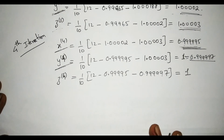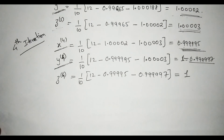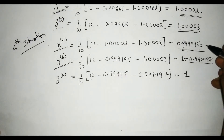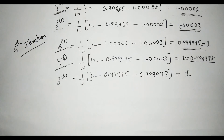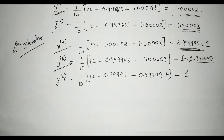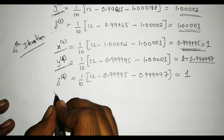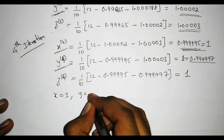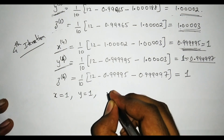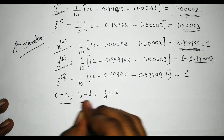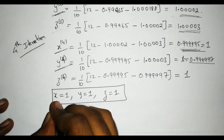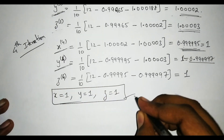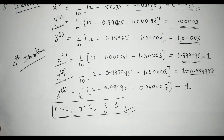In all three cases you can observe that the values are approximately equal to 1. So by the fourth iteration the solution converges to x = 1, y = 1, z = 1. This is how we do the Gauss Seidel method.